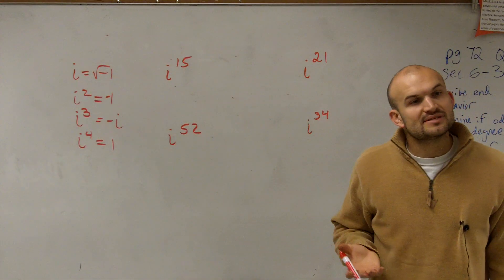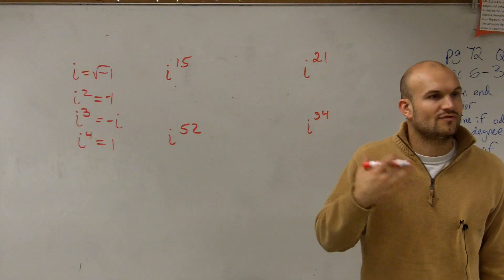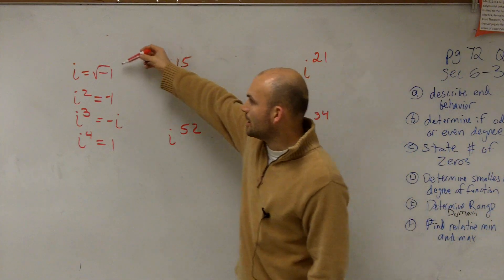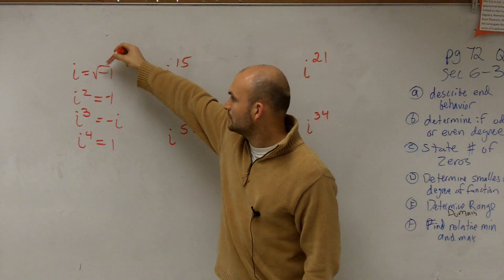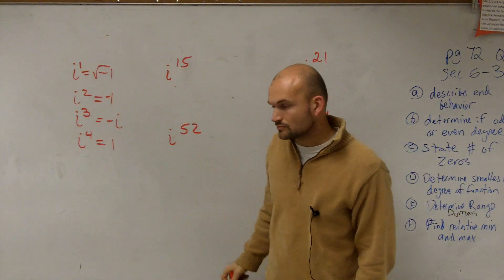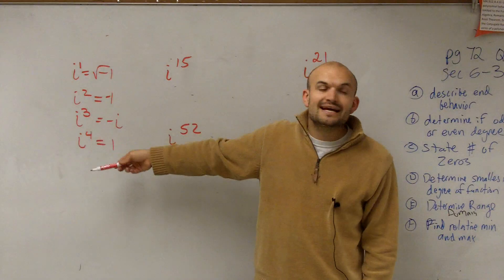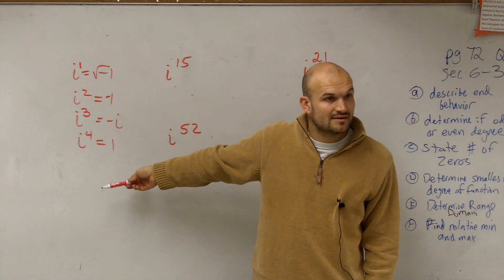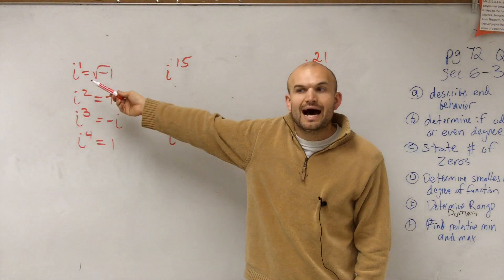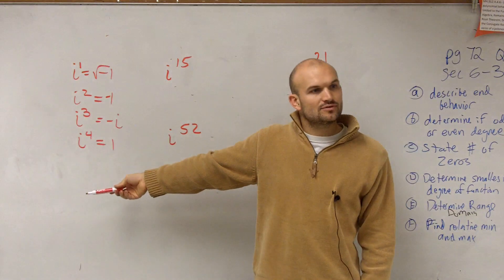Now, what happens, ladies and gentlemen, is this is going to keep on repeating itself on and on and on. Once we get up to the fourth, when we do i to the fifth, it's just going to go back to i. i to the fifth is equal to i.